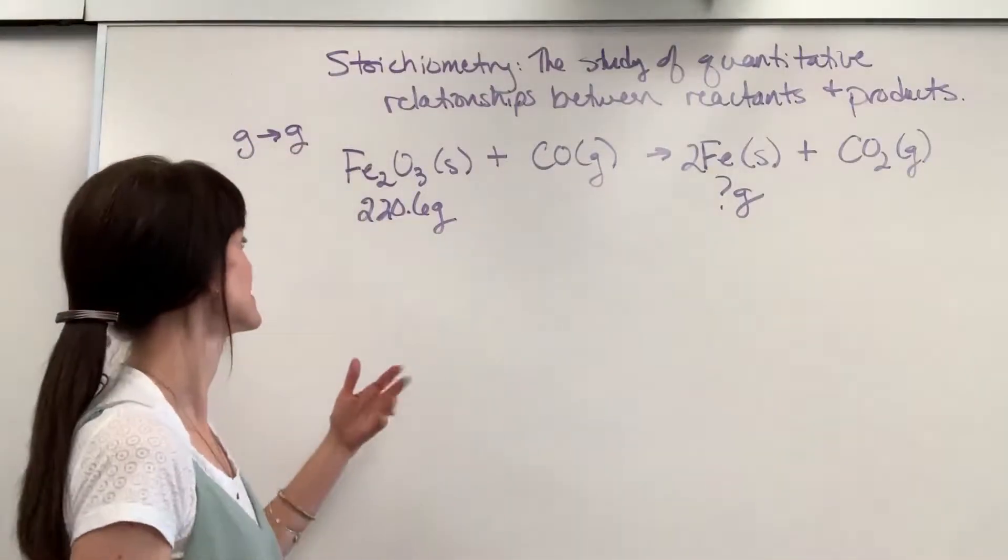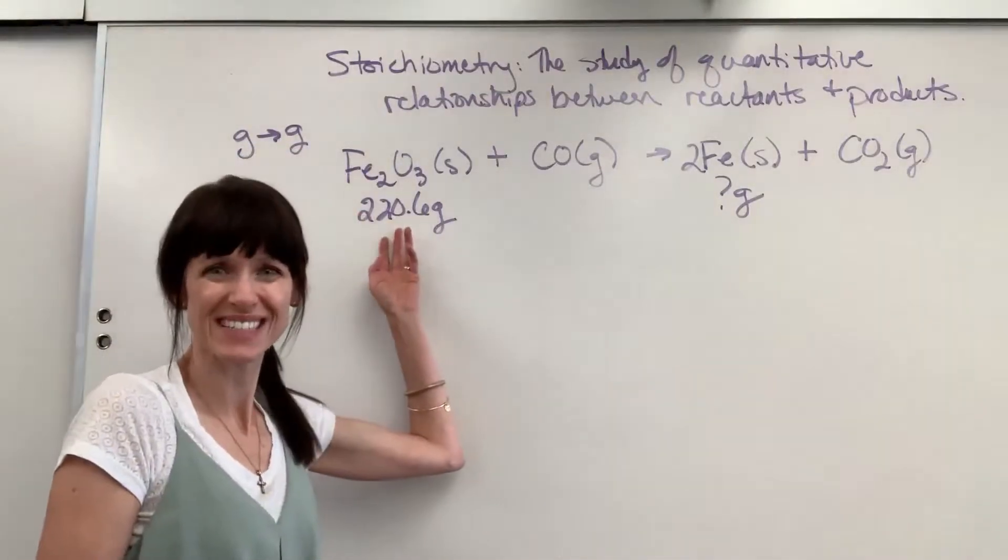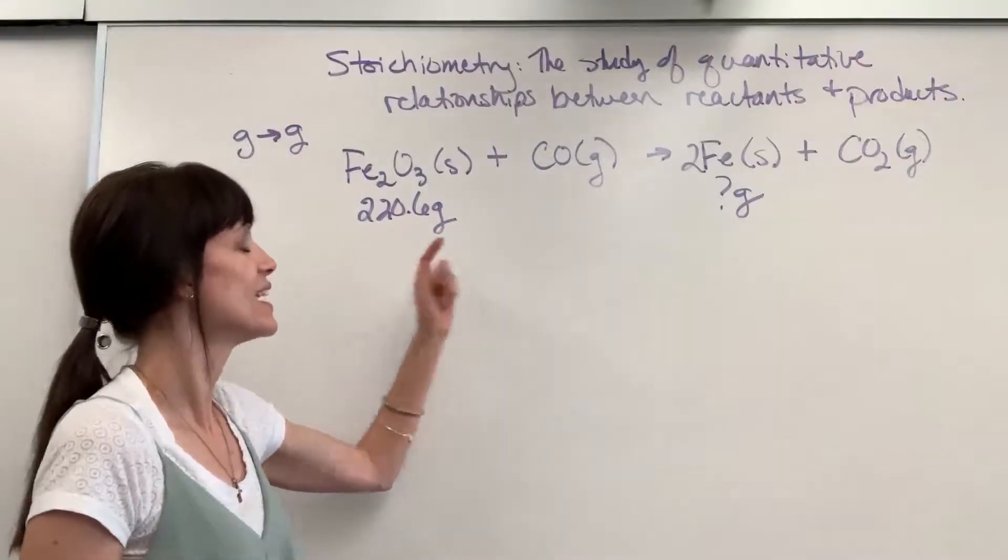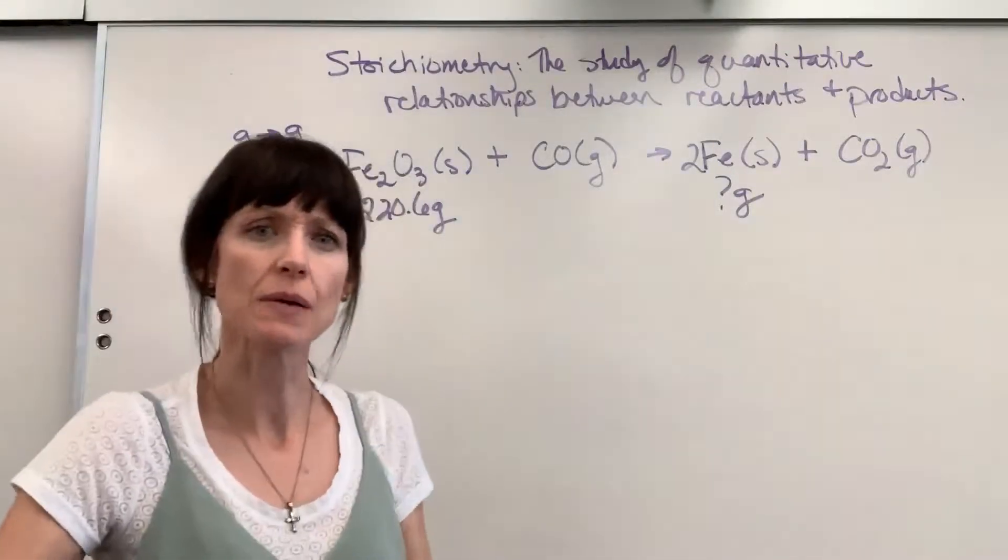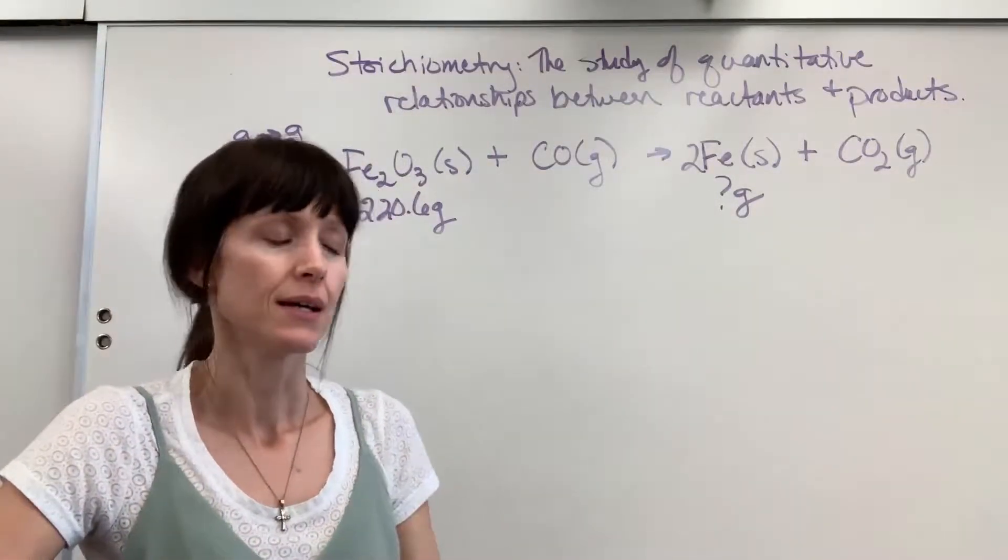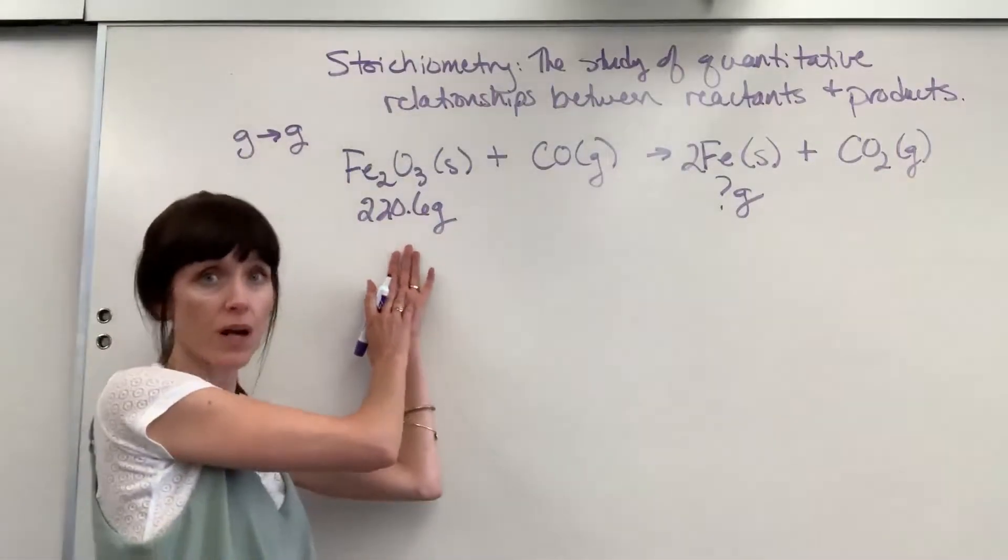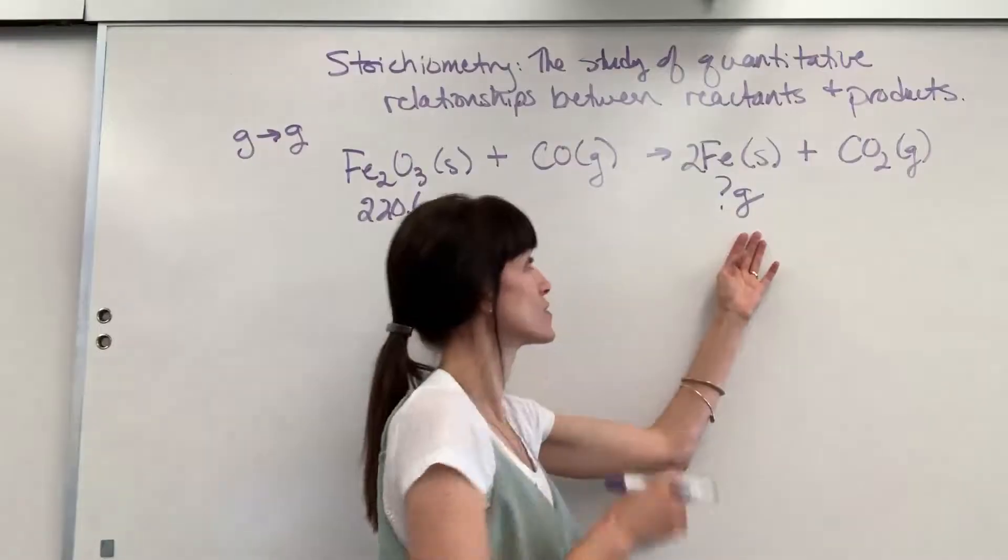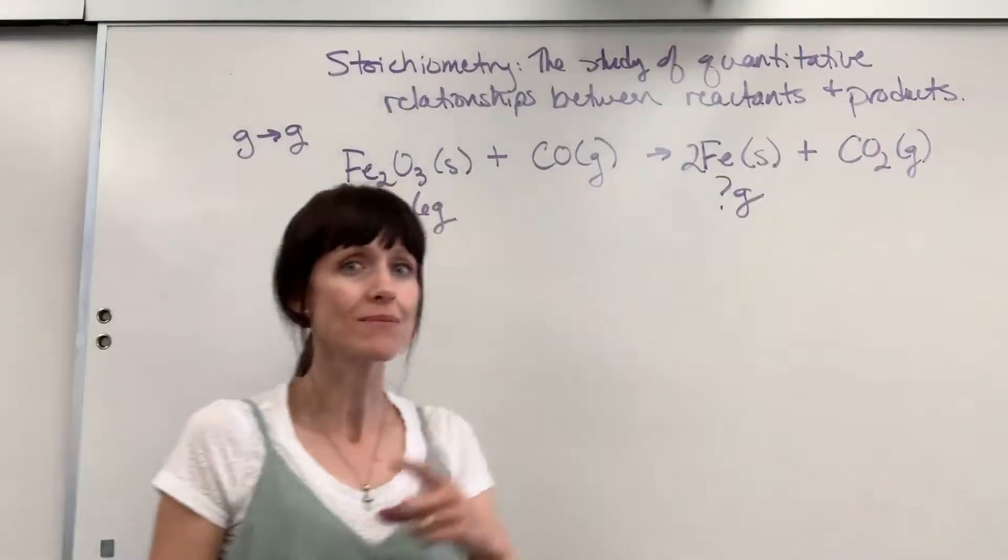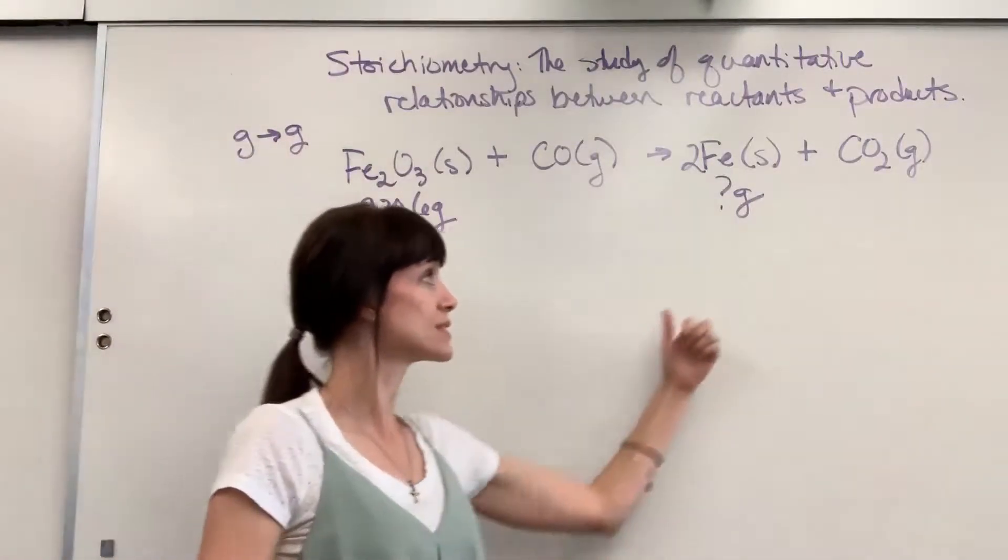Let's look at our problem. So you're given 220.6 grams of iron 3 oxide, and we want to know how many grams of iron will be produced. Again, what first strikes me is we're given information about one compound. We want the answer for a different compound. That means I'm stuck doing stoichiometry.